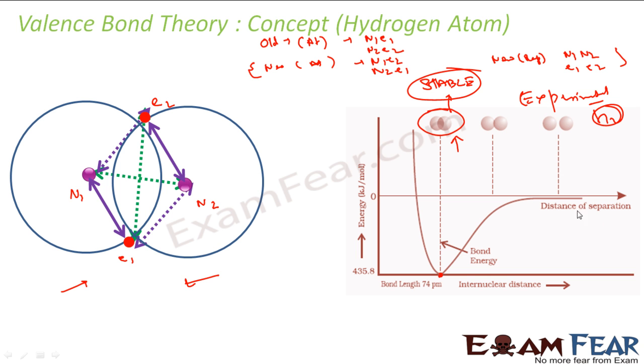This is the main concept behind valence bond theory. Experimentally they have found for hydrogen atoms: as the distance between atoms decreases, the energy also decreases and it becomes more stable. If you further decrease the distance, the energy increases and the atoms become unstable.